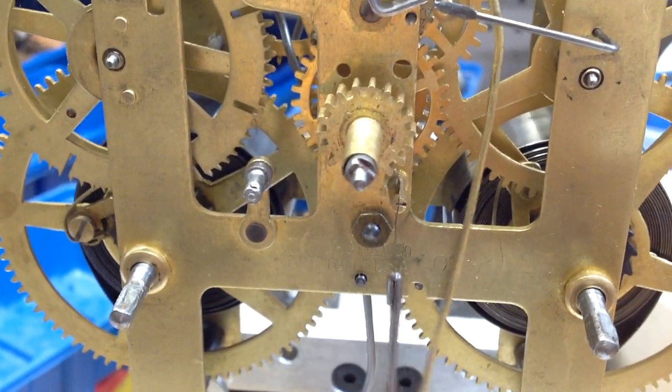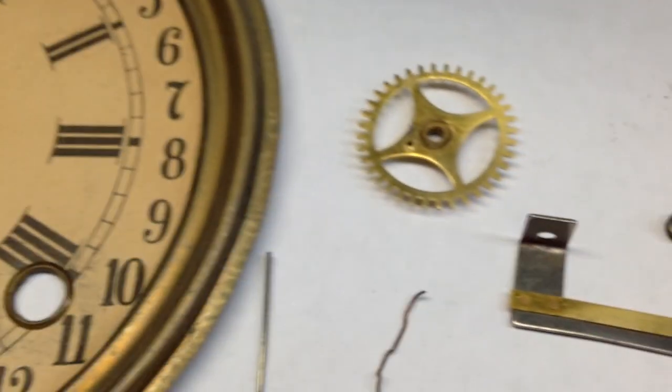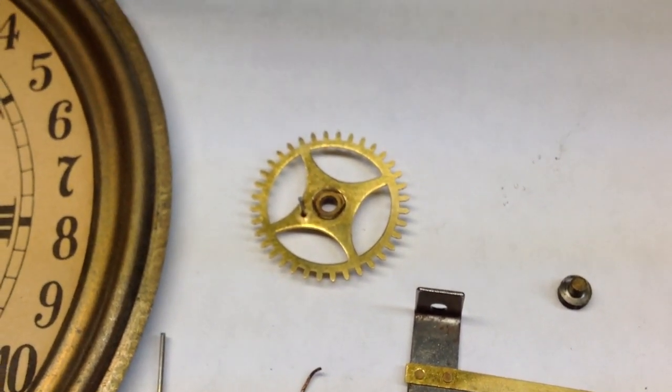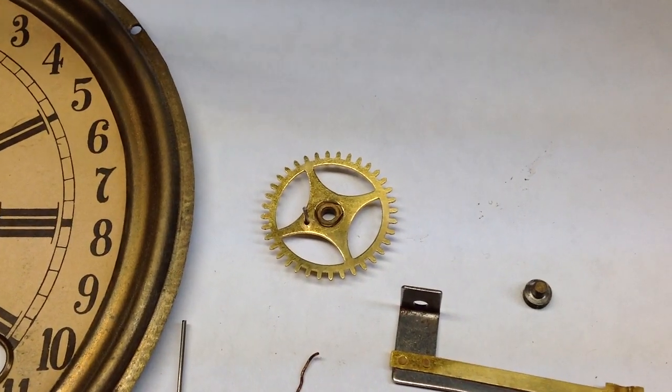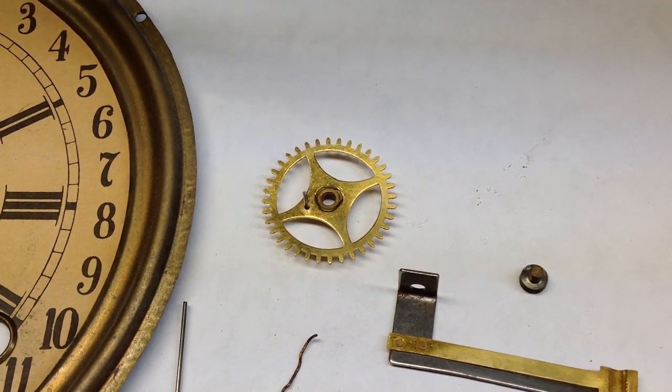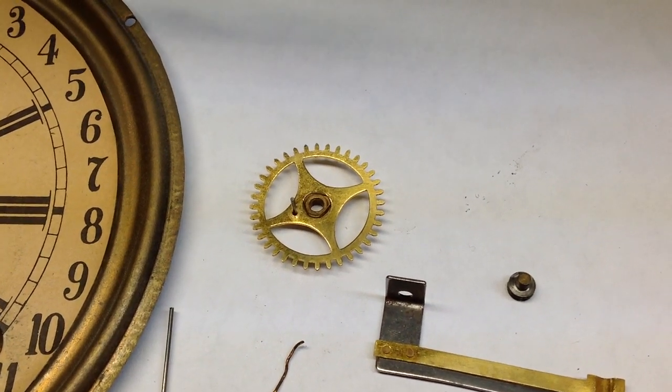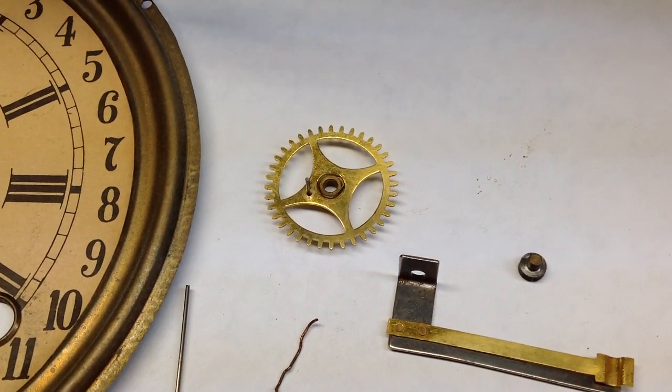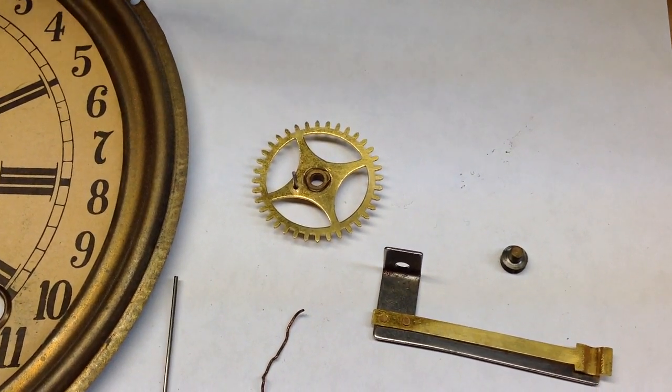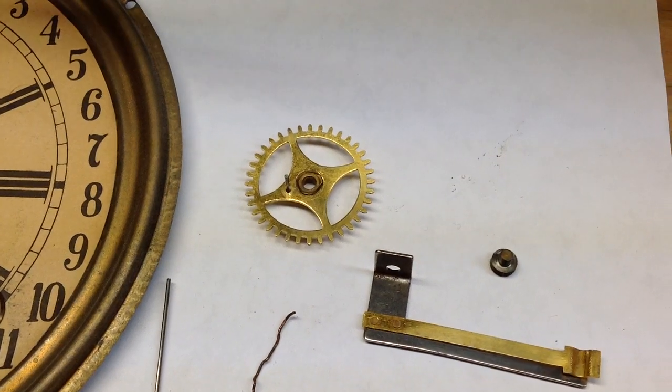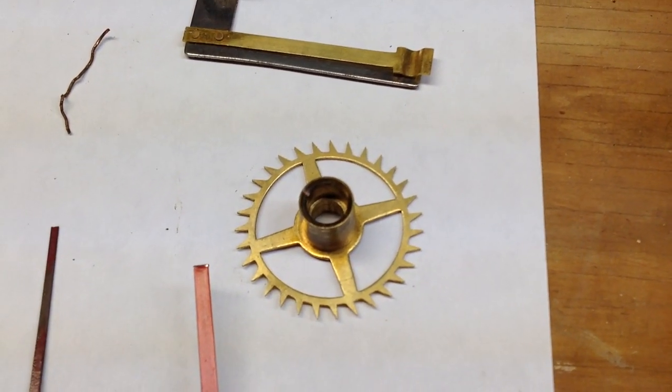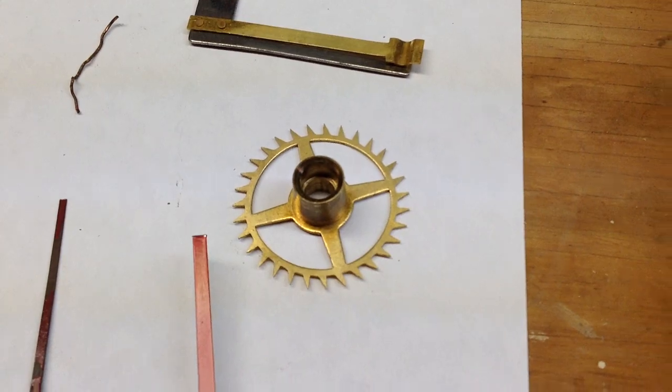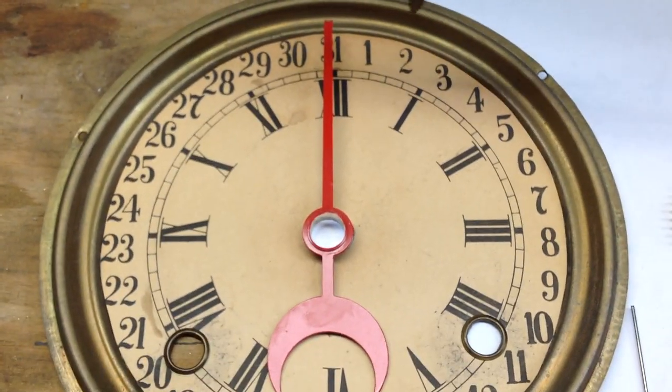This pinion has 18 leaves in it and the wheel that it drives has 36 wheels. So the hour tube rotates one full rotation in 12 hours. And you want this pin to come around once a day or once every 24 hours. So the 36 teeth on this being run by a pinion with 18 leaves on it means that the hour tube goes around two full revolutions for one full revolution of this. So this pin then engages in one of the teeth of this and moves it forward one notch.